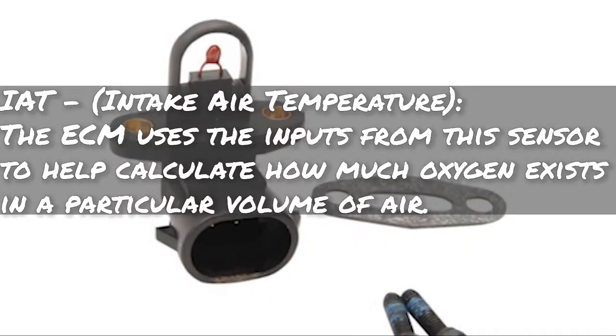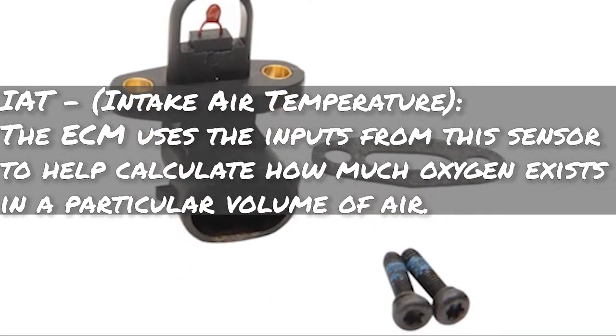The third sensor is the Intake Air Temperature sensor, the IAT. The ECM uses inputs from this sensor to help — not totally, but to help — calculate how much oxygen exists in a particular volume of air. If you're watching this video, you know that cold air means your Harley runs stronger than in hot temperatures. The reason is that cold air is denser than hot air and has more oxygen. So the colder your intake can be, the better. That's the IAT.